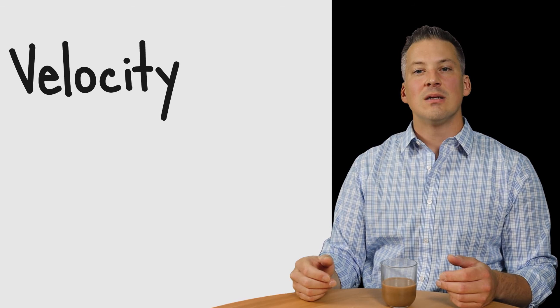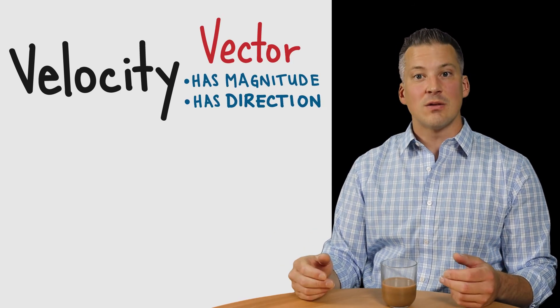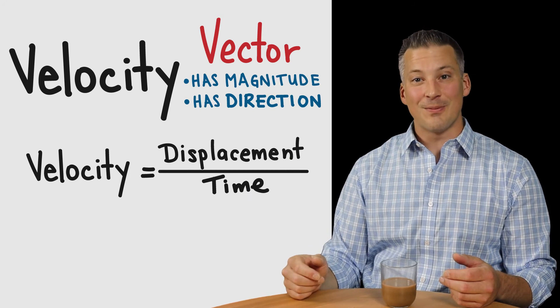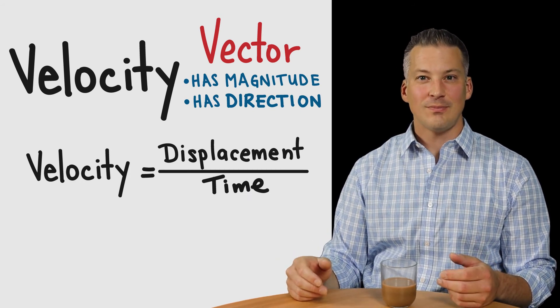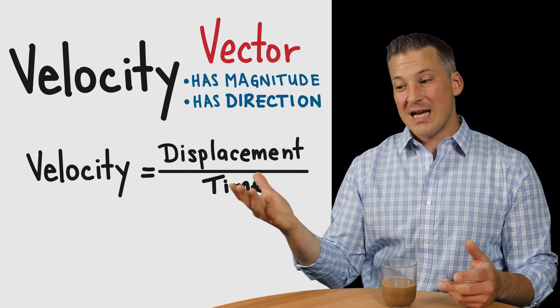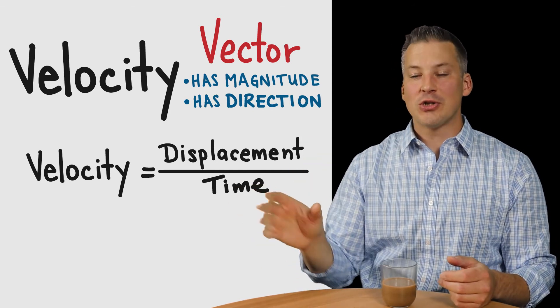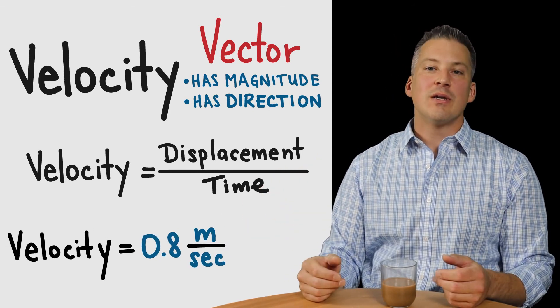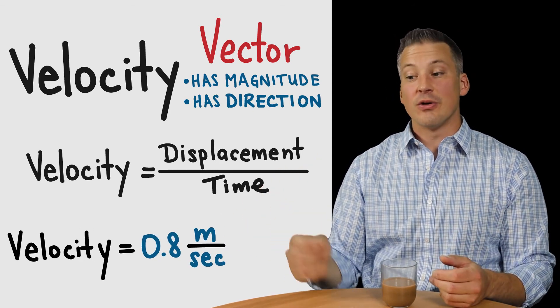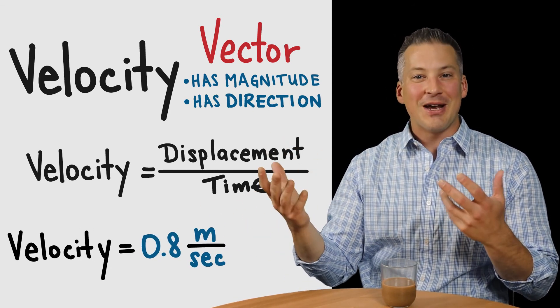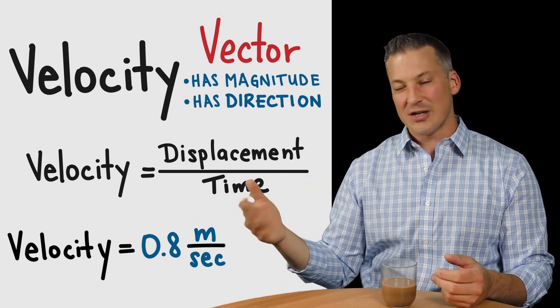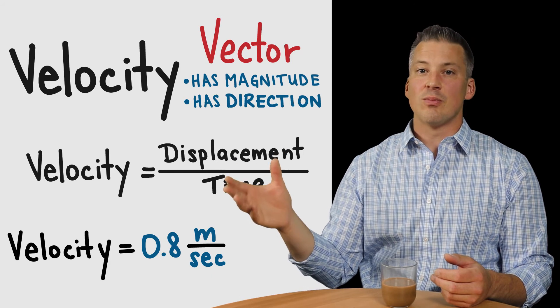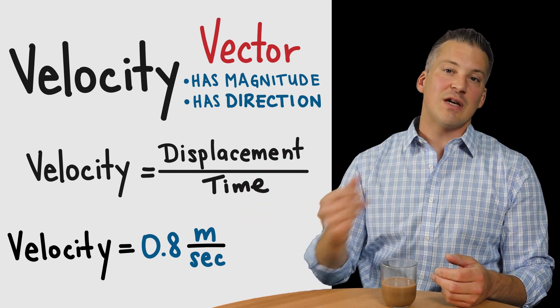And then velocity is a vector. Why is that a vector? Well, look at the formula for velocity. It has displacement in it. That's a vector. So, with velocity, technically then, we should have also added in the direction. So, the answer was 0.8. We didn't put in a negative sign, so it's implied to be positive. So, that's actually okay. But we can also add some words at the end. We could say also that it's 0.8 meters in the positive x direction.